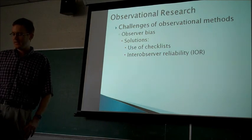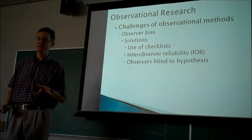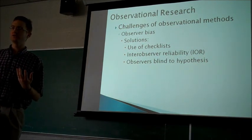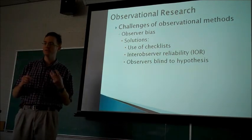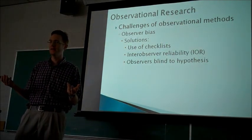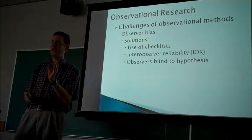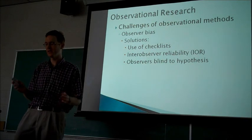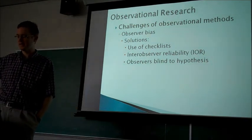Another thing that can really help is to have the observers blind to the hypothesis. This is really useful for avoiding confirmation bias. If they don't know what to expect to find and they're just blindly observing data and looking at behaviors without knowing what the relationship is supposed to be, that can help overcome confirmation bias.